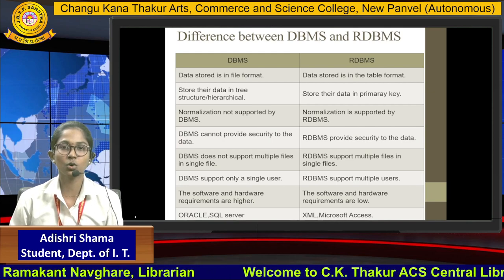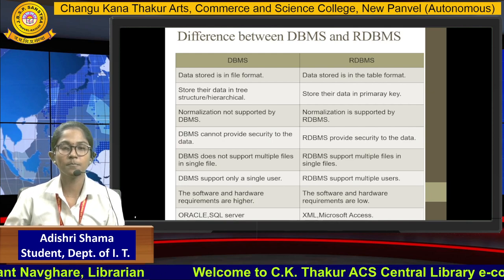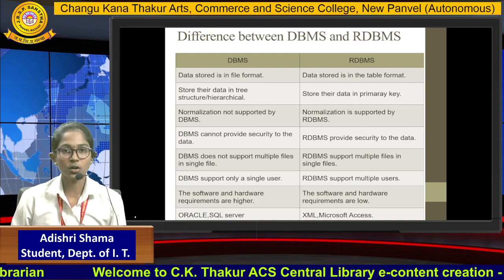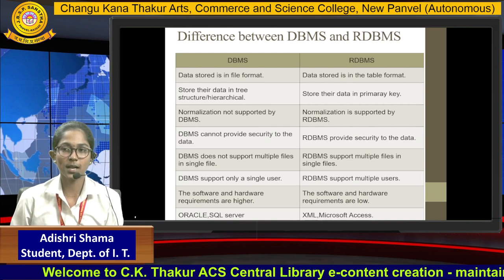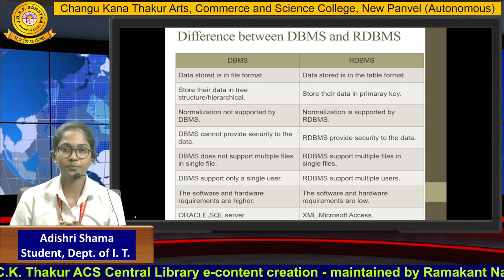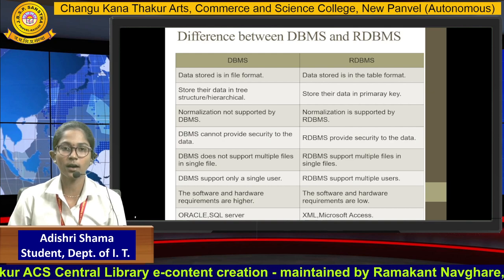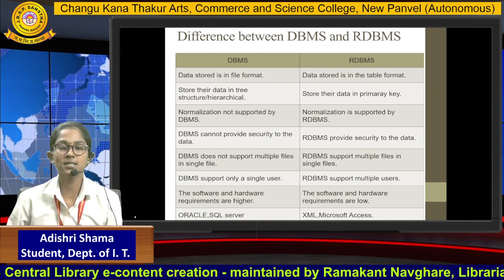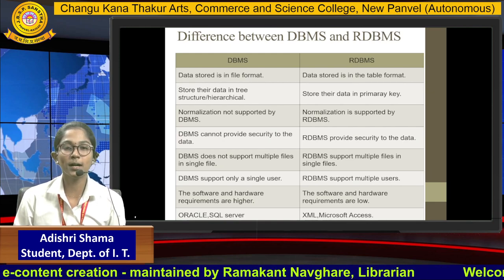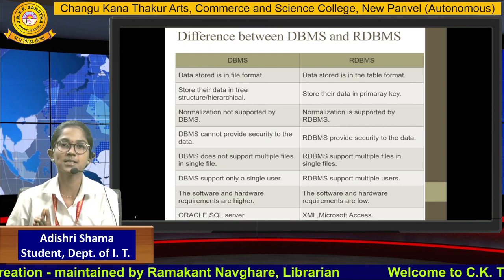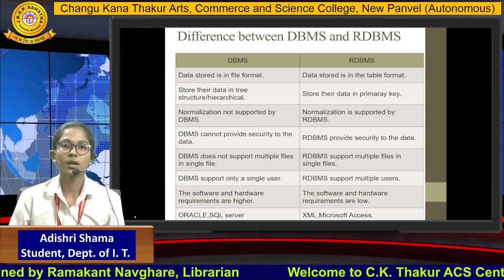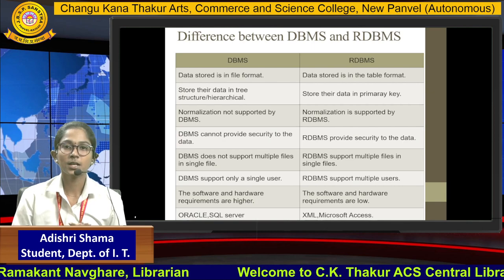In RDBMS data is stored using a primary key. Normalization is not supported by DBMS but is supported by RDBMS. DBMS cannot provide security to the data, whereas RDBMS provides security to the data. DBMS does not allow multiple files in a single file, whereas RDBMS provides multiple files in a single file.